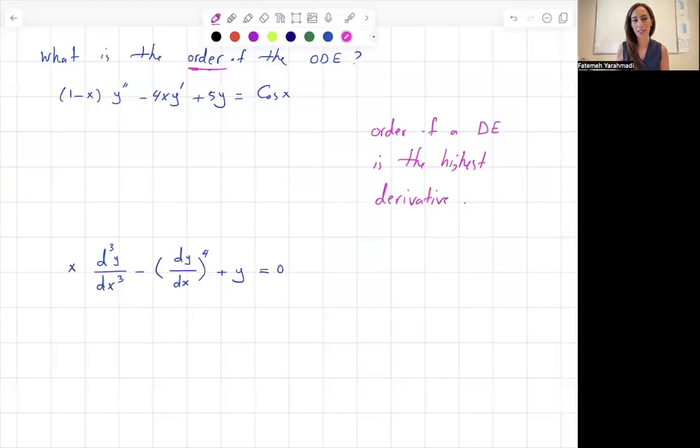It's very easy to see that for the first differential equation, you have (1-x) times the second derivative of y minus 4xy' plus y equals cos(x). So basically, the second derivative of y is the highest derivative. So the order is equal to 2.